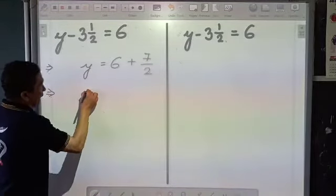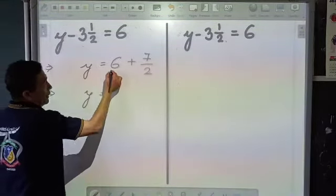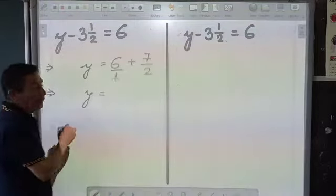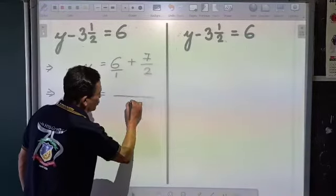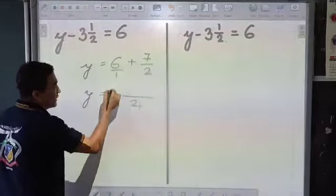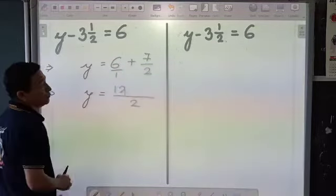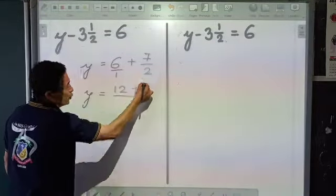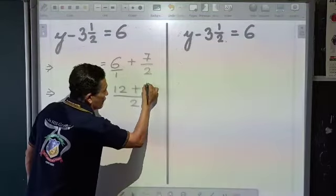Now I can add these two fractions. LCM, this is 6 by 1. LCM of 1 and 2 will be 2. 1 will go 2 times, 2 into 6 is 12, plus 2 will go once, so 1 into 7 will be 7.